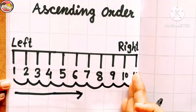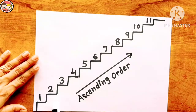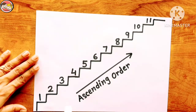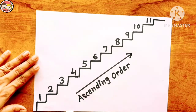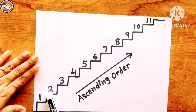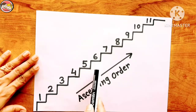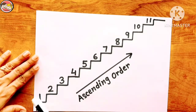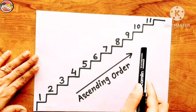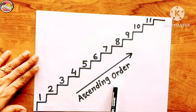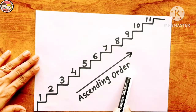Now look at this picture. Here we can easily see stairs marked with numbers going up: one, two, three, four, five, six, and so on. So when numbers go up from smallest to largest, it is called ascending order.